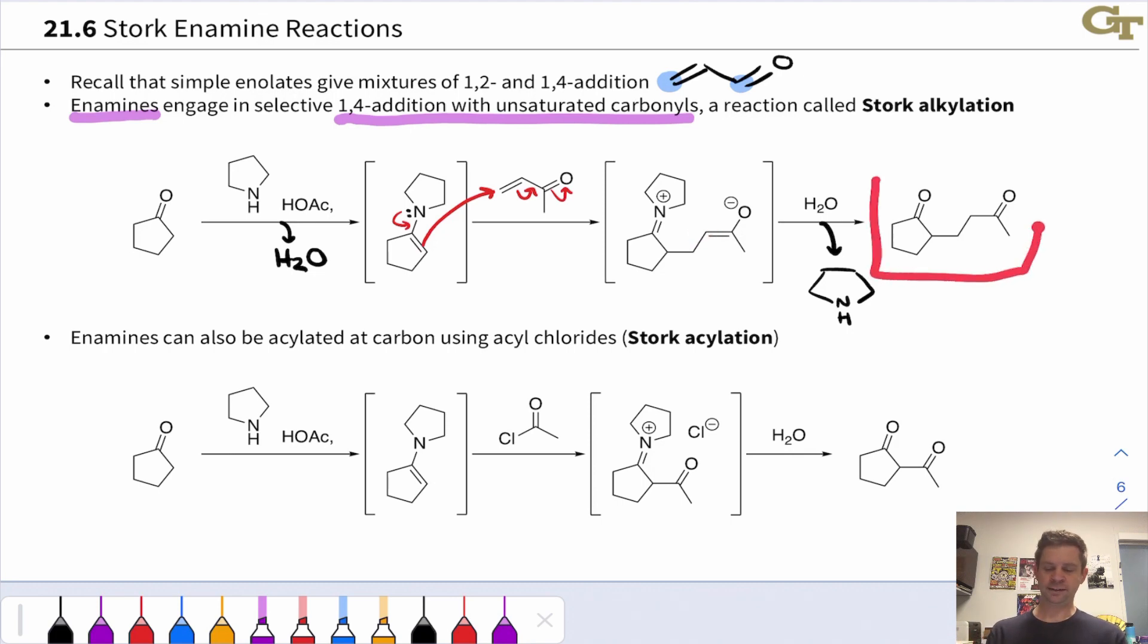And so notice this product is a 1,5-dicarbonyl. It looks like it came from addition of an enolate right here to an alpha-beta unsaturated ketone. We did this indirectly using the enamine nucleophile as a kind of enolate surrogate or enolate stand-in that avoids 1,2 addition because of the softness of the enamine. So this is Stork alkylation, and it's a great way to alkylate alpha to a carbonyl group.